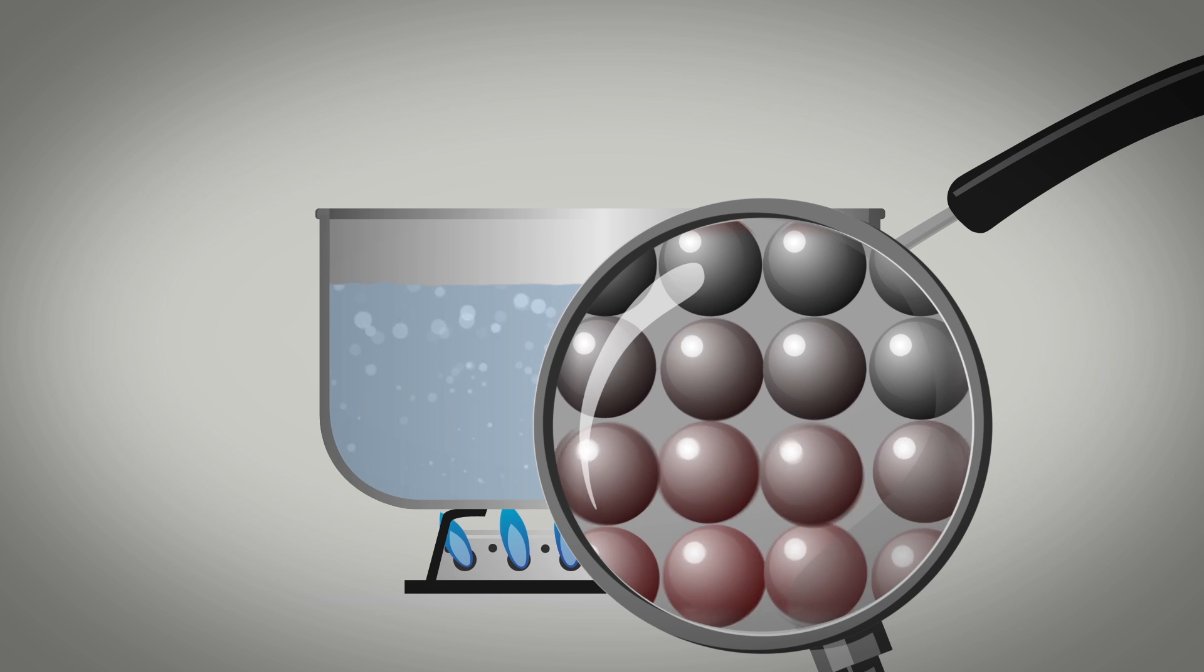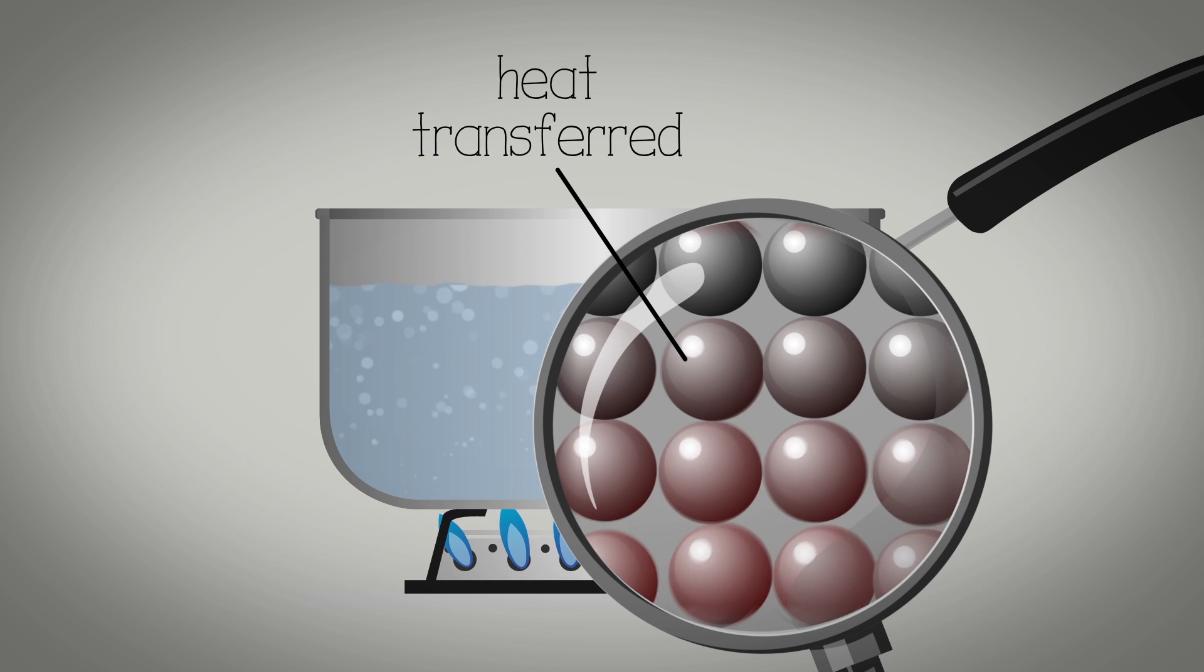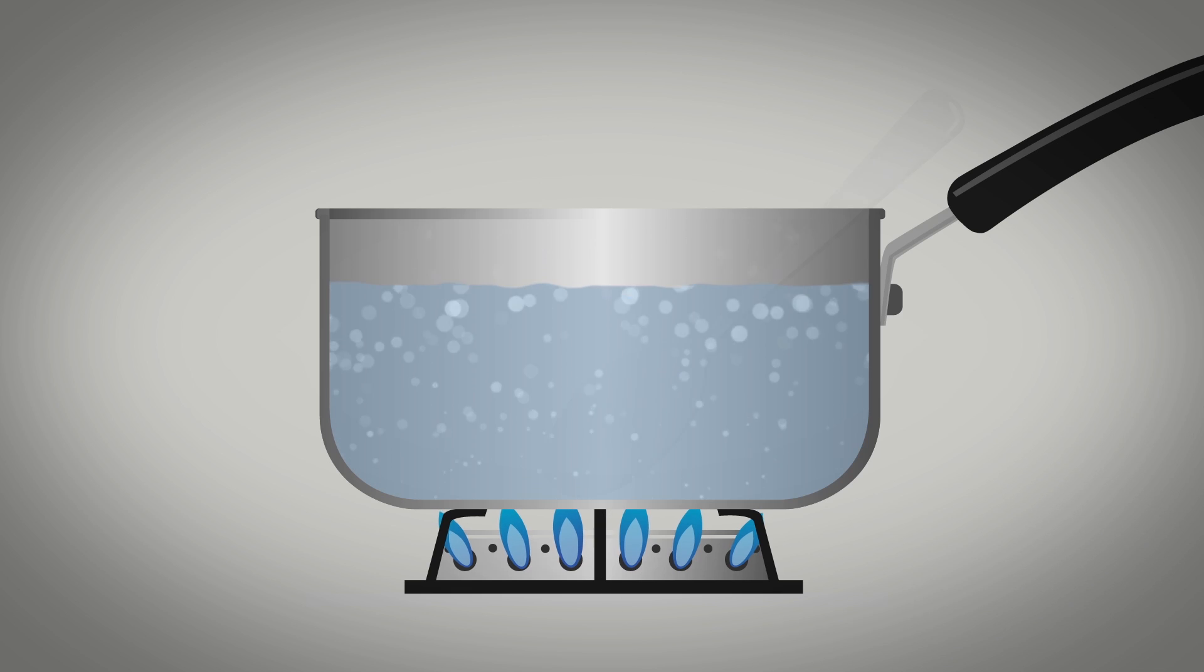As they vibrate, they pass on the heat energy to other atoms nearby, and they pass it on to others and so on. This is why, if you put a metal spoon into a pan of boiling water, it will gradually heat up until it is too hot for you to hold.